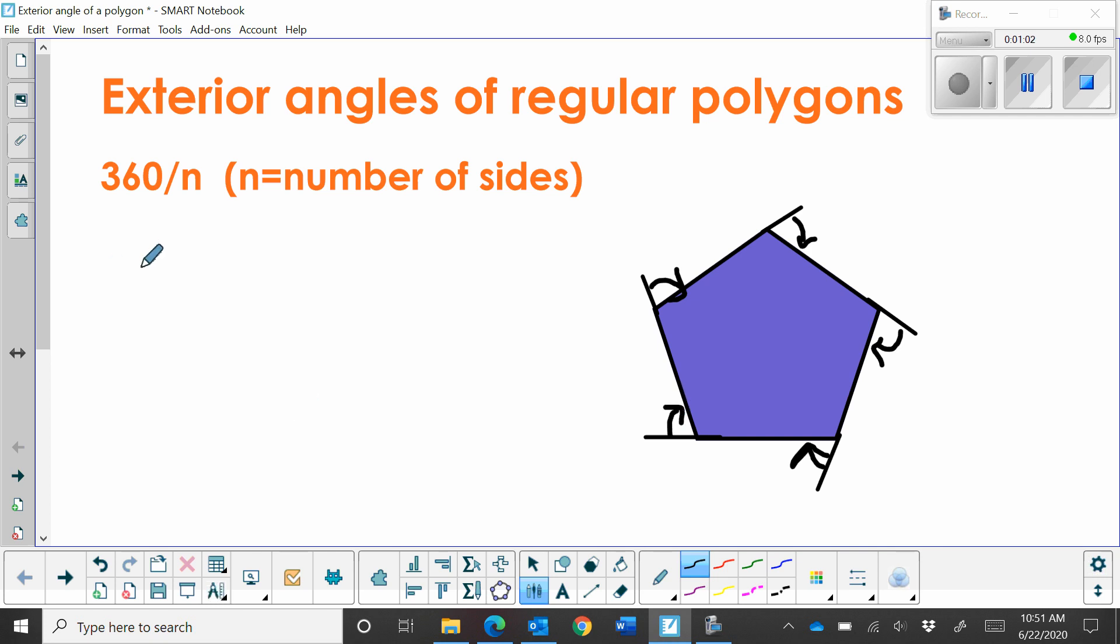So to find that angle, I'm just going to take 360 and divide it by the number of sides, in this case 5 because we have a pentagon. And that gives us 72 degrees.